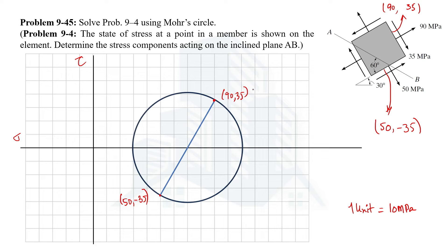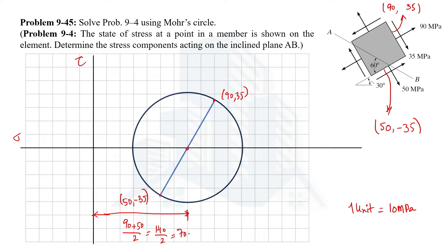We should calculate some key values on the Mohr's circle. The first is the center. Looking at the grid it appears to be at 70 MPa, and we can verify this by averaging the normal stresses of the two points: (90 + 50) / 2 = 140 / 2 = 70 MPa. So the center of the Mohr's circle is at 70 MPa.